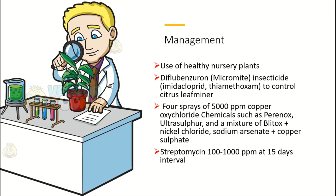We can also apply four sprays of 5000 ppm copper oxychloride, along with other chemicals like Perinox, ultrasulphur, and a mixture of Blitox plus nickel chloride and sodium arsenate plus copper sulfate. Antibiotics like streptomycin up to 1000 ppm applied at 15-day intervals are also recommended for management of citrus canker. I hope you liked this video — please share it with colleagues and friends. Thank you very much.